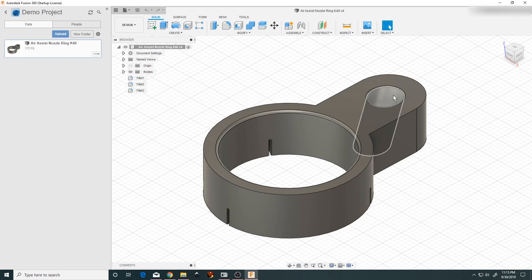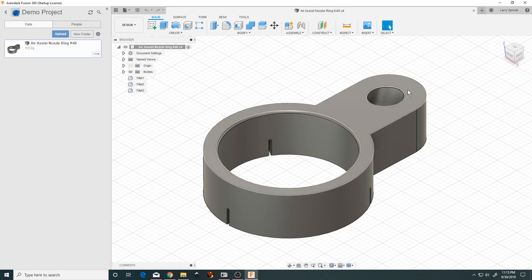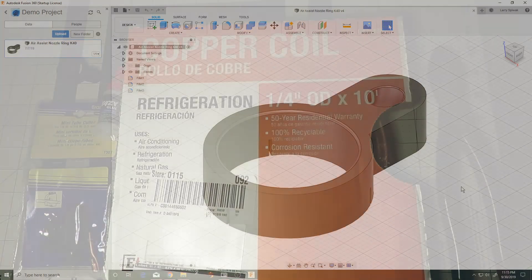Because the nozzle tip is so small, it doesn't take a high flow rate compressor to effectively assist the cutting. And I'm able to use a quiet air pump that can hardly be heard at all.